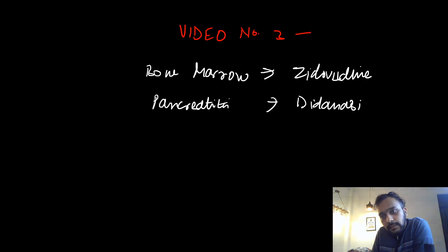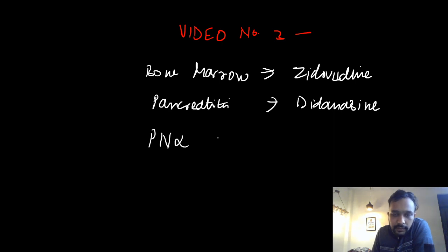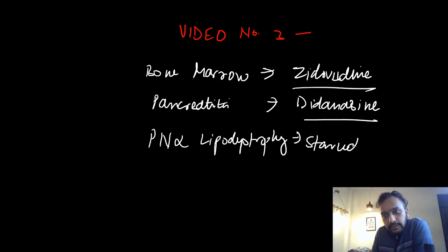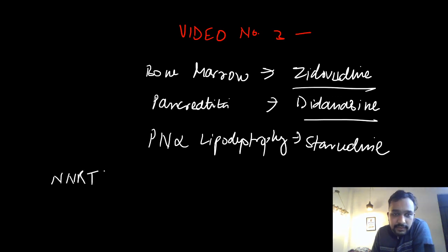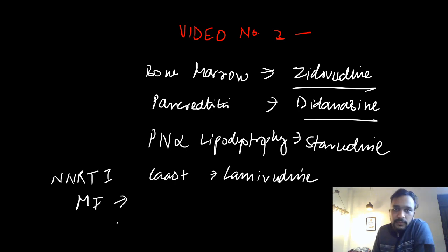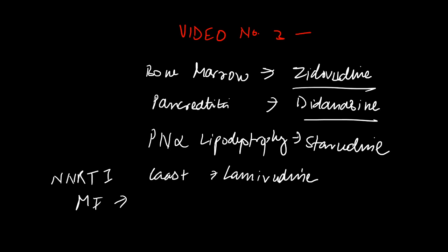Then peripheral neuropathy and lipodystrophy syndrome — these are caused by stavudine. Now, which NRTI has the least side effects? It is lamivudine.